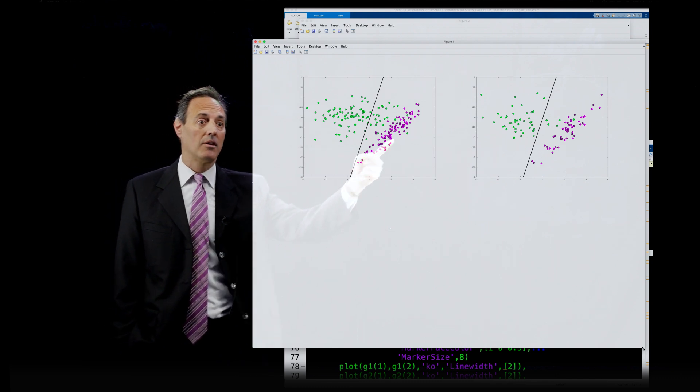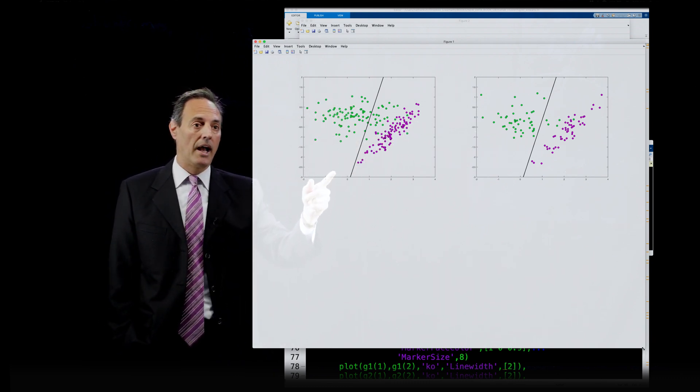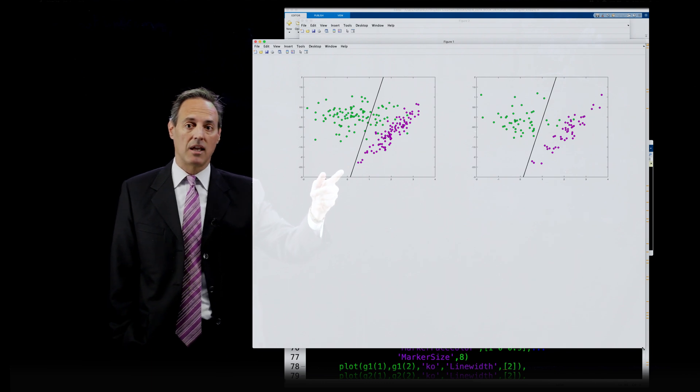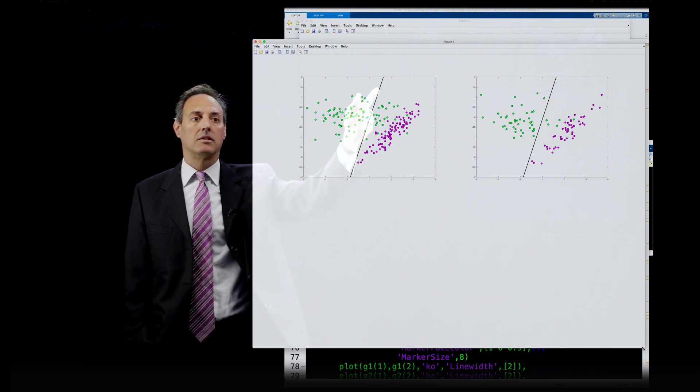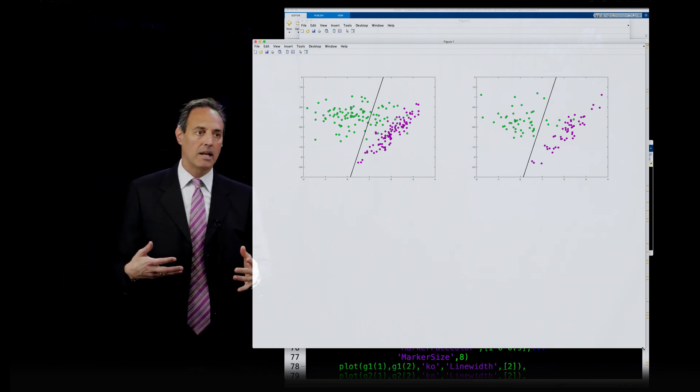So, it did not do the separation I actually had for the data I created. Remember, the data I created was one random distribution here, another one here, and what I actually did in the separation in this k-means, it thinks that this is the separation of the data. So, you can see that's maybe problematic.